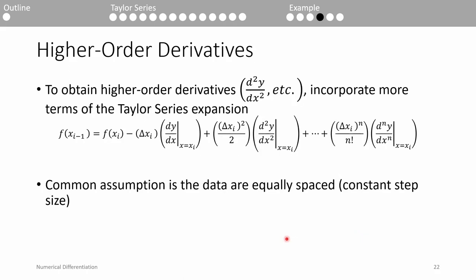Throughout this video, we've only covered first derivative estimates. What if we wanted to estimate the second derivative? All we need to do is incorporate more terms of the Taylor series. Here's the formula for the backward difference Taylor series expansion. We originally truncated the expansion after the dy/dx term, but we can truncate after the second derivative term, then rearrange the terms we kept to obtain the second derivative estimate. We can combine it with the original backward difference formula to replace the dy/dx term and eventually obtain an expression for the second derivative estimate. Be aware that truncating the Taylor series later on can help you get higher order derivative estimates, though this really only works with uniformly spaced data.